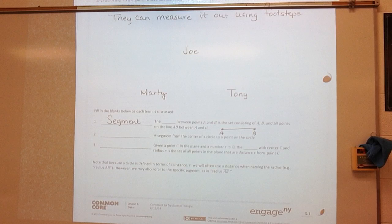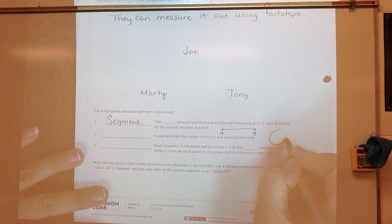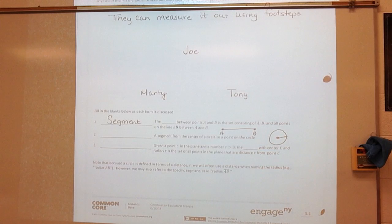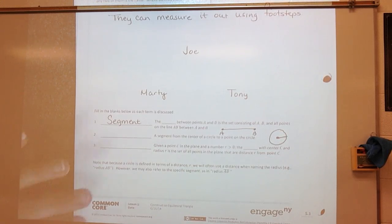A segment from the center of the circle to a point on the circle. So if I'm looking at a circle, and I'm looking at the center, and I'm looking at a segment from the center of the circle to a point on the circle, we should know what this is, but we call that the radius.